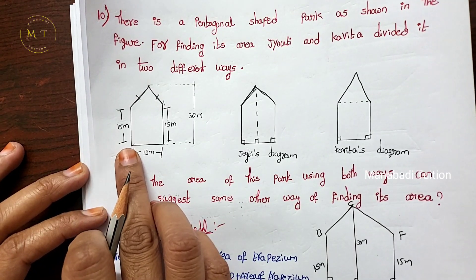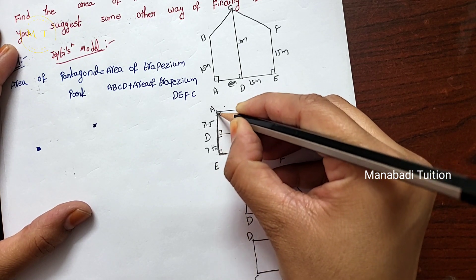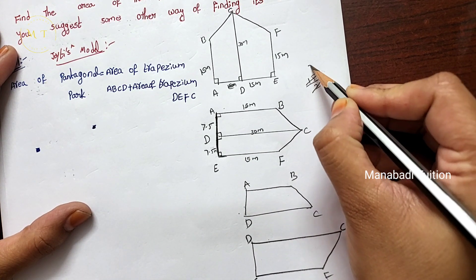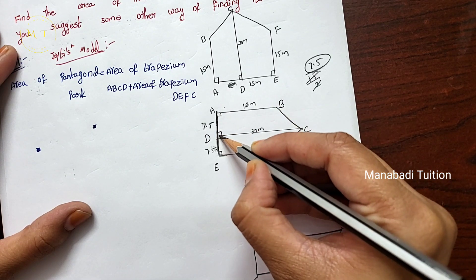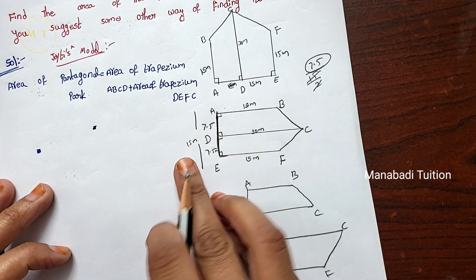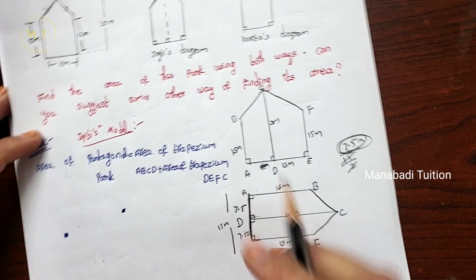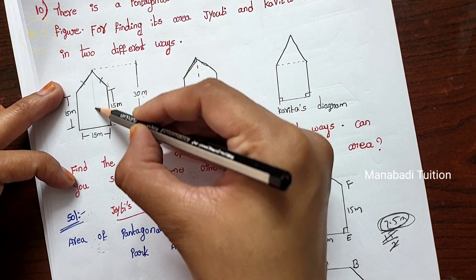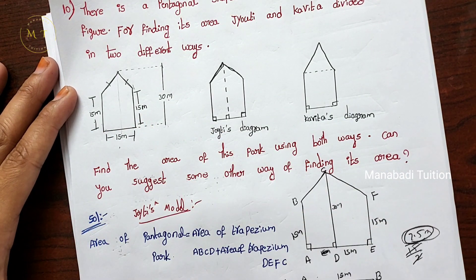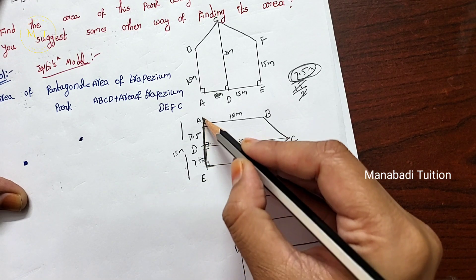The measurements are: the total down line is 15 cm. If you turn the diagram, this line is 15 cm. Here we have two trapeziums divided, so 15 divided by 2 is 7.5 cm. And here you have 7.5 cm, and here you have 7.5 cm.